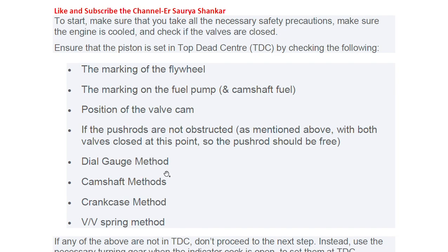The camshaft method involves opening the camshaft window and then visually checking. When the exhaust and intake valve rollers are at the base circle of the cam, the unit is at TDC. So we open the camshaft window and observe — when the exhaust valve is going upward on exhaust stroke and the intake valve roller is at the base circle, the unit is at TDC.